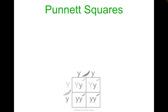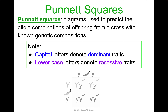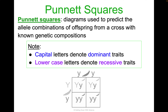I'm sure you're familiar with Punnett squares. These are diagrams used to predict allele combinations of offspring from a cross with known genetic components. We assign letters: capital letters denote dominant traits and lowercase letters denote recessive traits. If we know something is dominant or recessive — those are known genetic components — we use Punnett squares to figure out and make predictions about next generations.